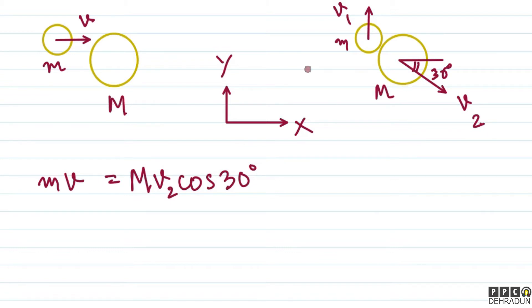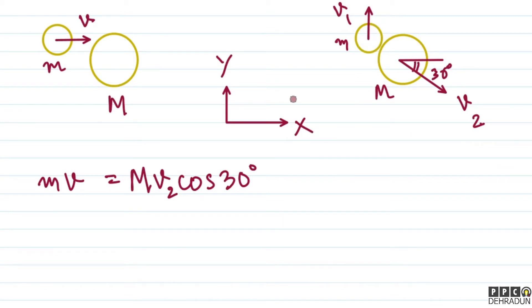Initial and final momentum along the x-axis will remain equal, because for the complete system the net external force is zero. Similarly, along the y-axis, initially there was no momentum, so after the collision the net momentum along y will also be zero. So whatever momentum is upward must be equal and opposite to the momentum downward.